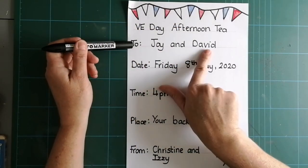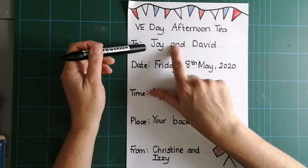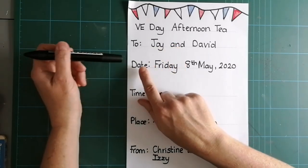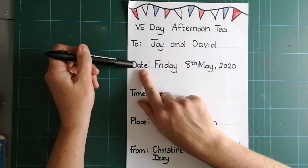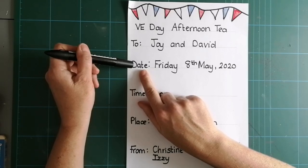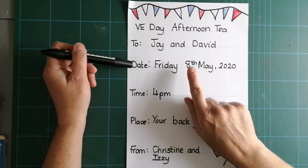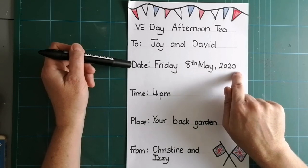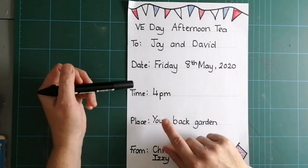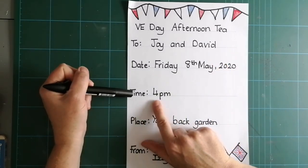So, who I'm inviting, Joy and David, because in case it goes to their neighbour, and they might think they're invited as well. The date, I've got to tell them the date, because they won't know what time is, what day is happening. Friday, the 8th of May, 2020, which is VE Day celebration. Time, 4pm.